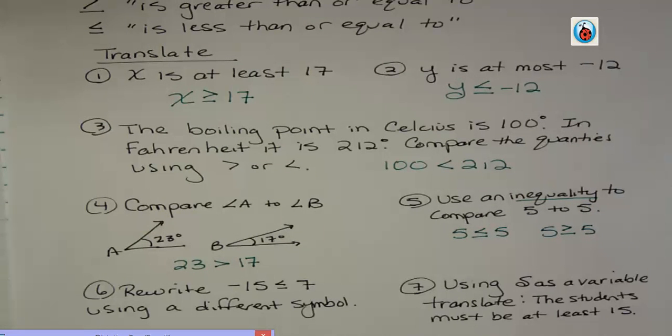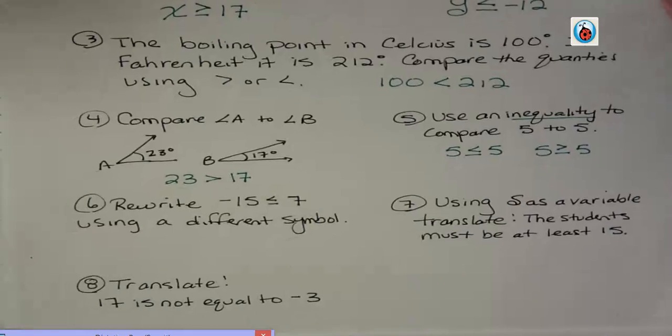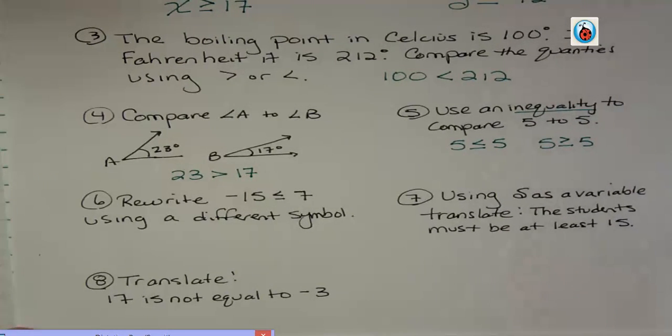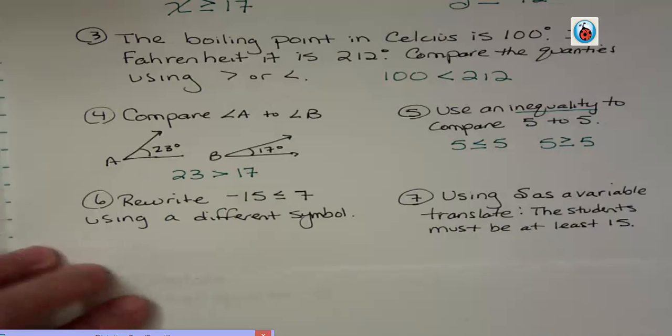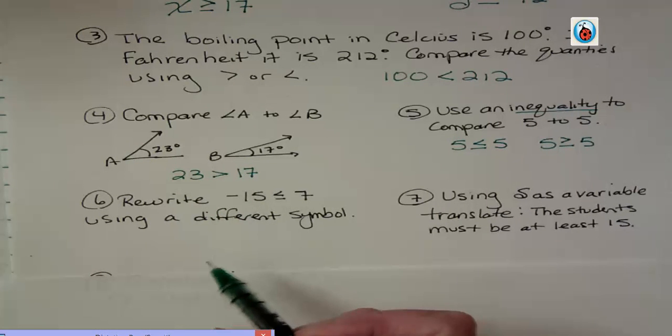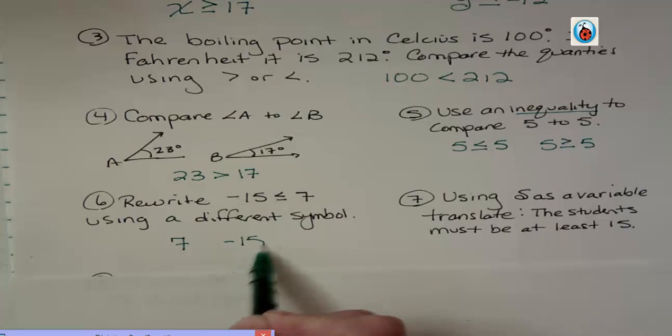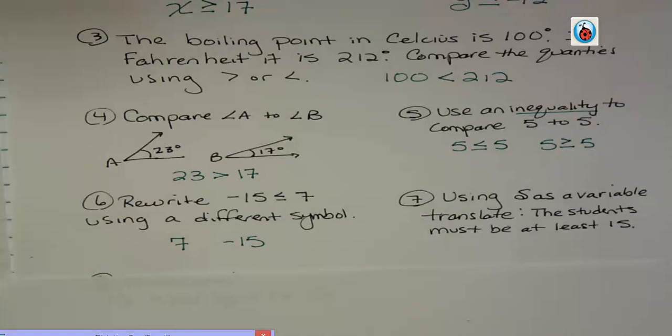Alright, rewrite negative 15 is less than or equal to 7 using a different symbol. Well, we want to use a different inequality symbol, I should say. So I'm going to rewrite this. I'm going to rearrange this, make this 7 and make this negative 15. If I want to rewrite it, I could change the order of it, but I don't want to change the value.